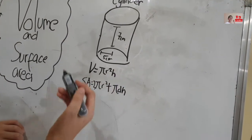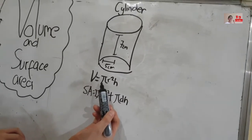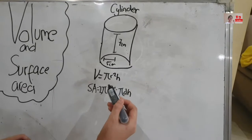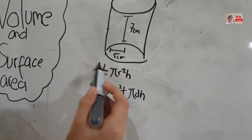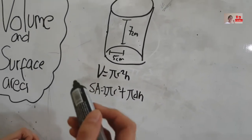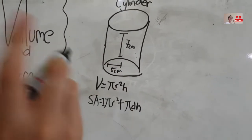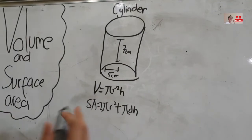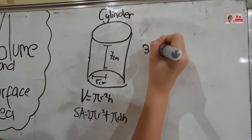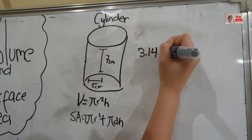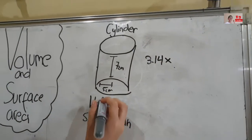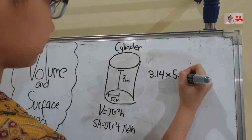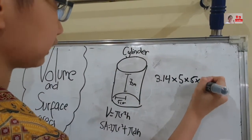Okay, for the volume, it is pi times radius to the power of 2, times height. So how do we solve this problem? The first thing we do is we need to simplify. So pi equals 3.14, and we times the radius — the radius is 5 centimeters. So that's 5 times 5 times 7.